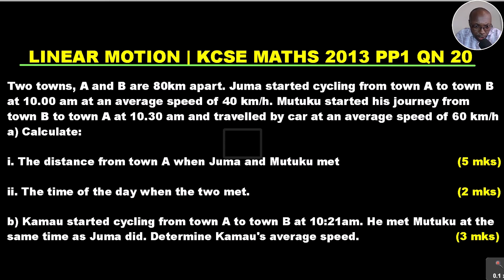Part A: calculate — 1) the distance from town A when Juma and Mutuko met (5 marks); 2) the time of the day when the two met (2 marks). Part B: Kamau started cycling from town A to town B at 10:21 a.m. He met Mutuko at the same time as Juma did. Determine Kamau's average speed.